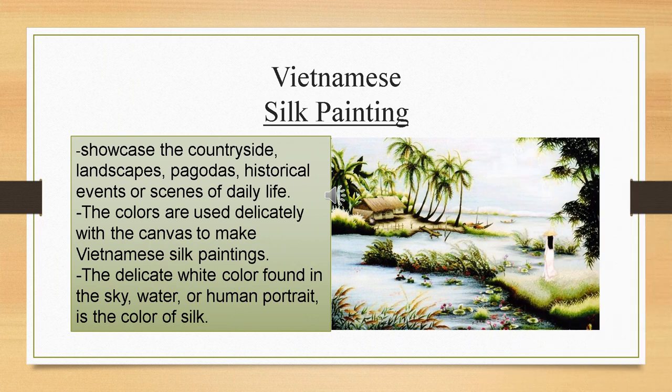Here is now the craft of Vietnam, which is silk painting. It showcases the countryside, landscapes, pagodas, historical events, or scenes of daily life. The colors are used delicately with the canvas to make Vietnamese silk paintings, and the delicate white color found in the sky, water, or human portrait is the color of silk.